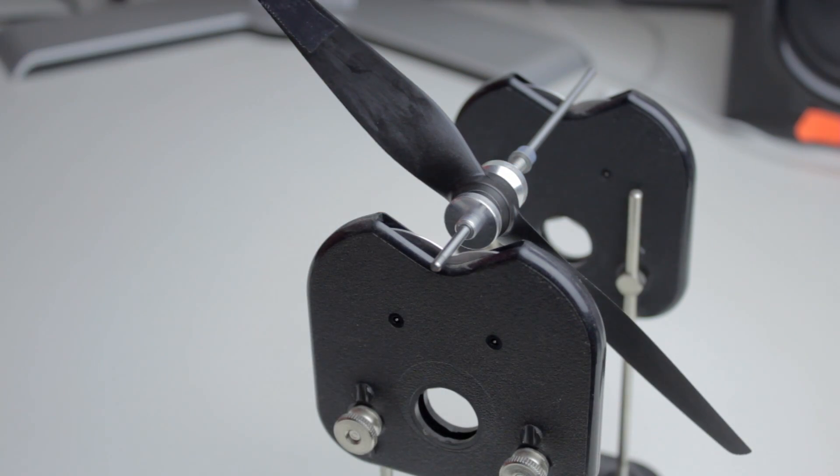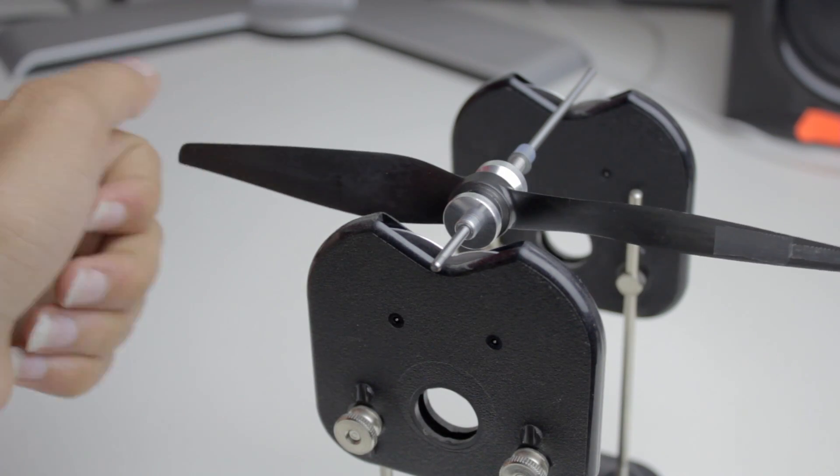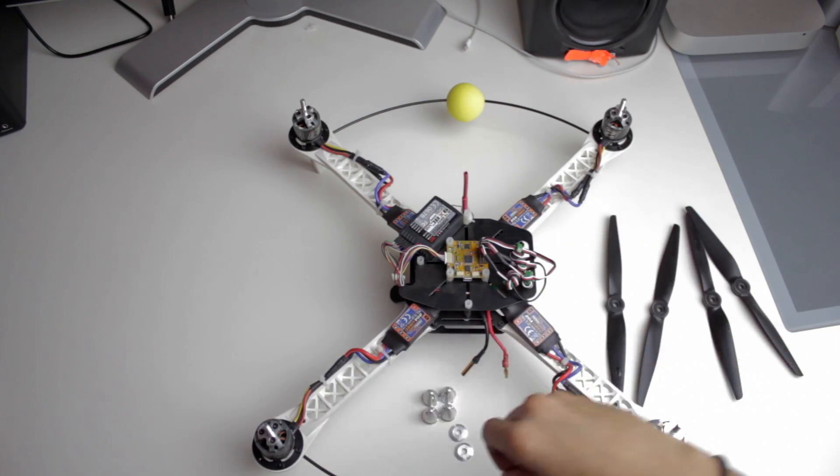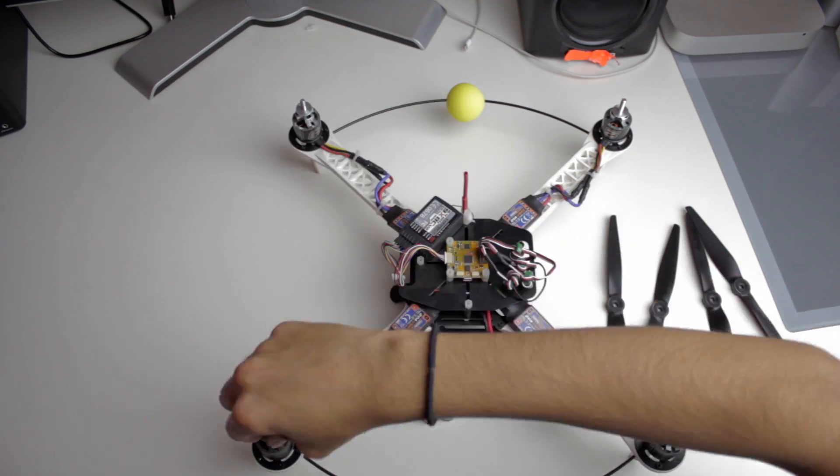Once you've added the right amount of tape, the prop should pretty much stay where you put it. Once they're balanced you can go ahead and put the washers on the motors and then the props.